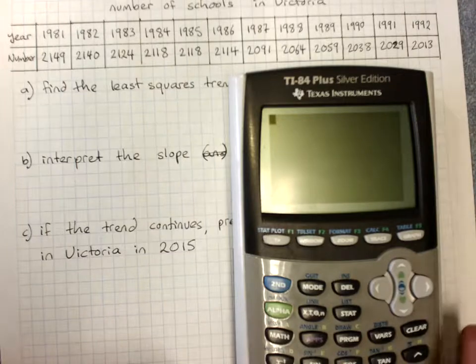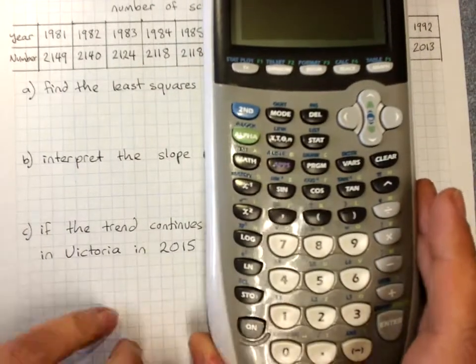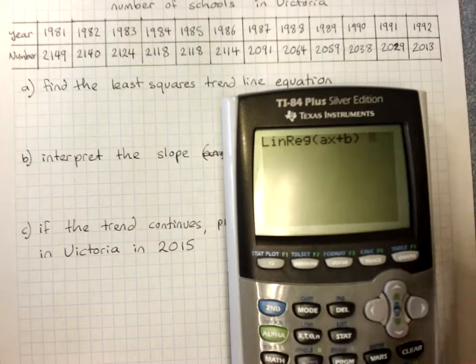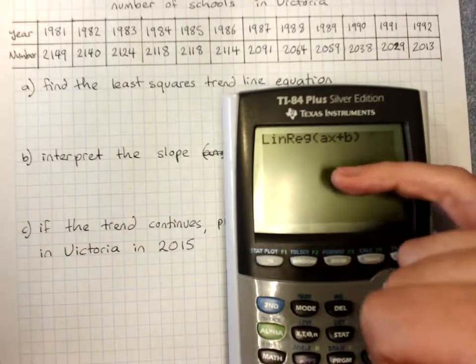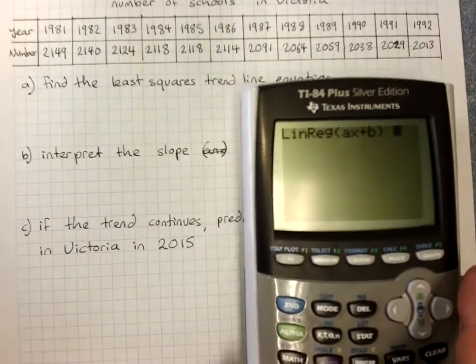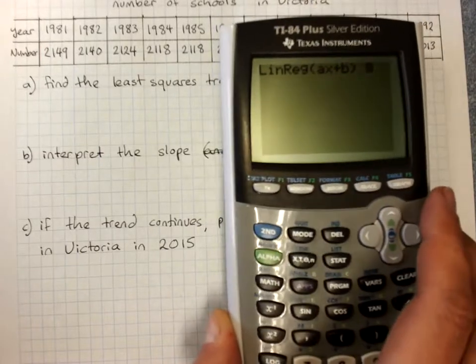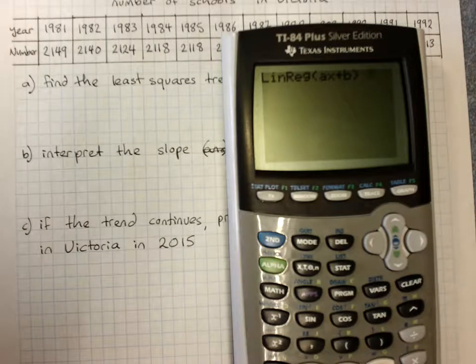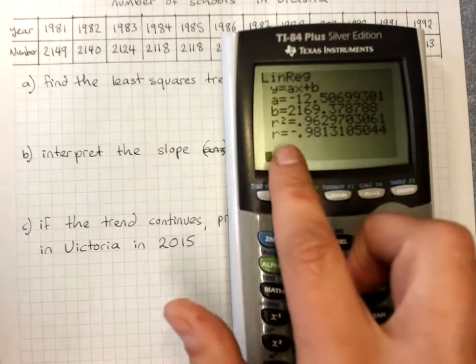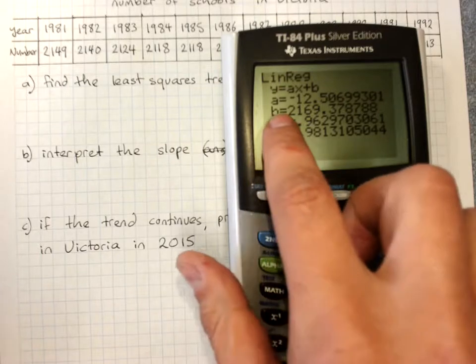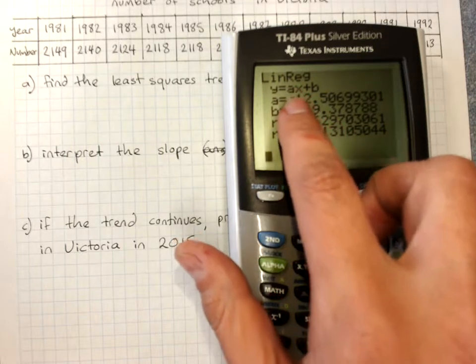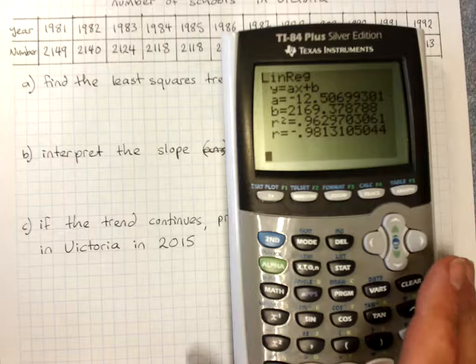Remember, check that diagnostic is on in the catalog. Then stat calc, 4 for linreg. Yours will probably have different spots to put L1, L2 and Y1 if you want to have a look at the line with your data. Or you can just do L1 and L2. So I'll get L1 and L2 in. Yours will probably look a little different. Enter. And here is the equation of the line of best fit. So I've got negative 12.5 for my gradient and 2,169 for the y-intercept.